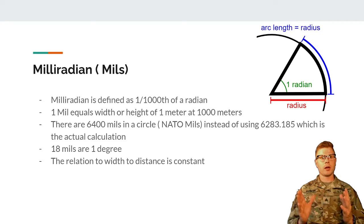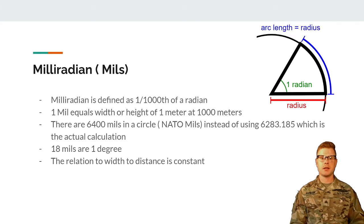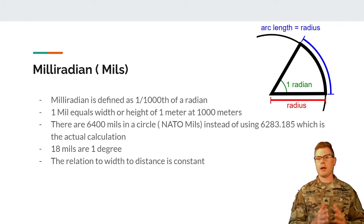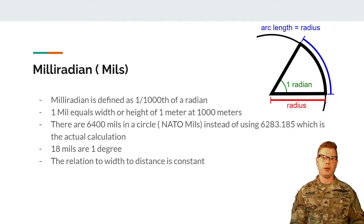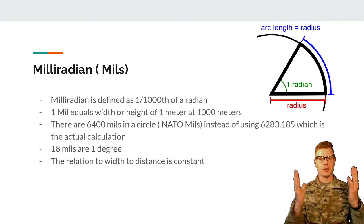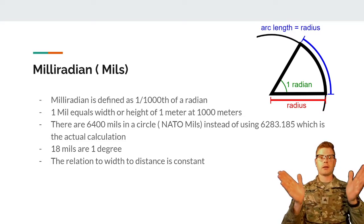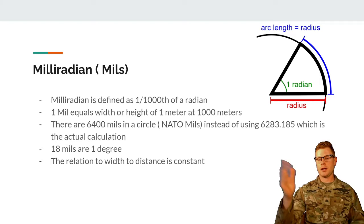Mils are for fine-tune adjustments for call for fire and long range surveillance, whereas degrees are used for shooting azimuths and walking with a compass — trying to maintain 5,400 mils while walking is just going to be impossible. The relation of width to distance is going to be constant. Objects are bigger when closer and smaller when farther away, and how we measure mils is constant carried out to the distance.